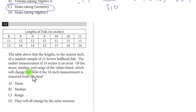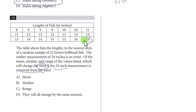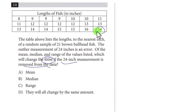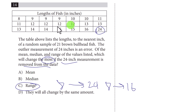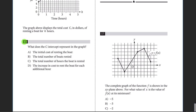Question fourteen: which value changes the most if the 24-inch measurement is removed? The answer is the range — right now it spans 8 to 24; removing 24 shrinks it to 8 to 16, a big change. The mean and median won't be affected as much because there are many numbers and the average is around 12 or 13.